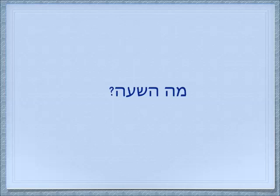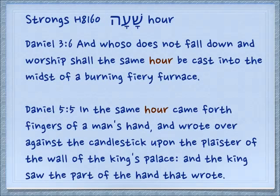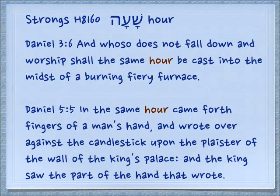In modern Hebrew, if you want to know what time it is, you say 'mah ha-sha'a,' which literally means 'what is the hour.' 'Sha'a' does appear in the Tanakh, but only in Daniel, and it's in the Aramaic — not surprising because the whole concept of timekeeping with 24 hours a day, 60 minutes an hour, and 60 seconds a minute all came out of Babylon. Daniel 3:6: 'Whoso does not fall down and worship shall the same hour be cast into the midst of a burning fiery furnace.' Daniel 5:5: 'In the same hour — at the same time — came forth fingers of a man's hand, and he wrote upon the plaster of the wall of the king's palace, and the king saw the part of the hand that wrote.'